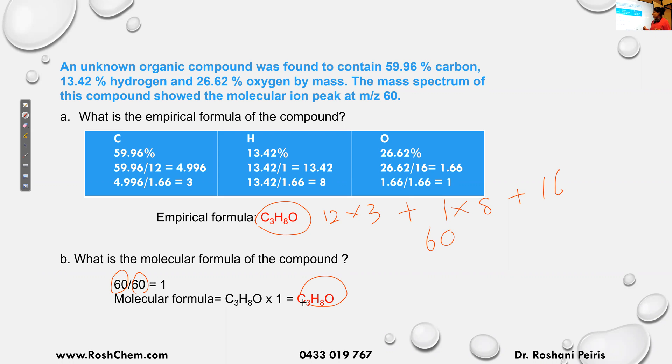So 60 divided by the molar mass of the empirical formula gives you one, which means the molar mass of the empirical and the molecular formulas are the same. So therefore the molecular formula is also C₃H₈O. So now my unknown compound is C₃H₈O.